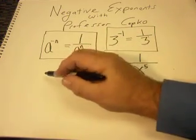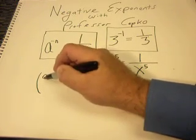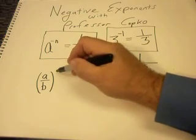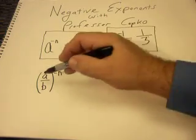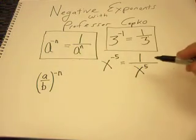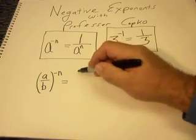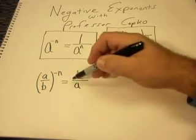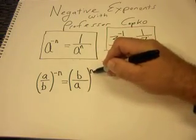Alright, another rule is if I have a fraction such as a over b, and the entire fraction is to a negative exponent, which negative n could represent any exponent. So I've got a over b, and the entire thing, that's what the parentheses are all about, is to a negative n. Then we take the reciprocal.